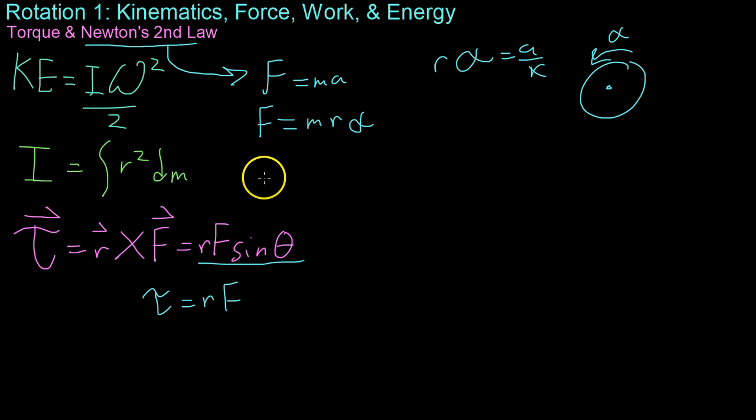So, substituting, let's say, we have to multiply then by R to get something we can substitute in the torque for. So, we multiply through by R, you get RF equals MR squared alpha, or torque equals MR squared alpha.